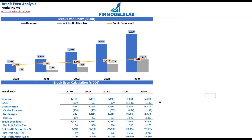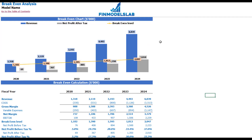On the break-even tab you may find the calculation of the revenue break-even level and a break-even chart. For this particular use case, the revenue break-even level is less than the actual revenue calculation, which means that the company is profitable.